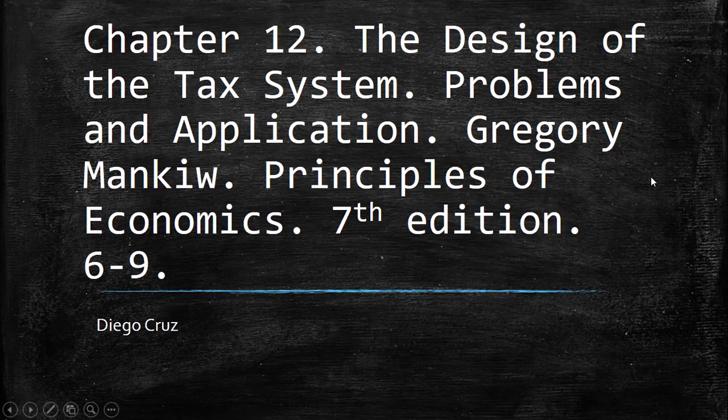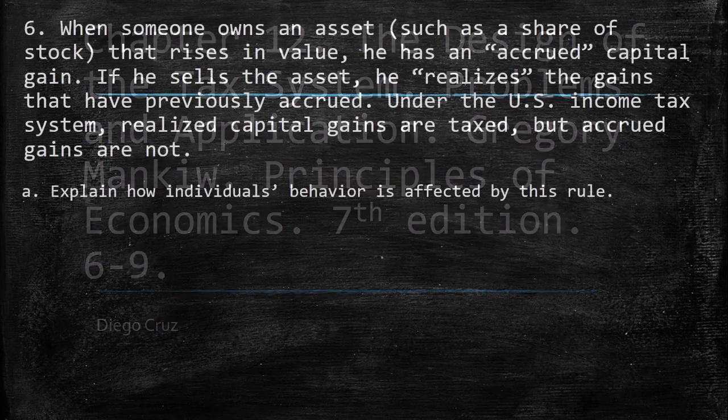Welcome to this new video. This is about chapter 12, the design of the tax system, and we are going to try to solve the problems in application from 6 to 9. Remember, this is a book by Gregory Mankiw, Principles of Economics, 7th edition.